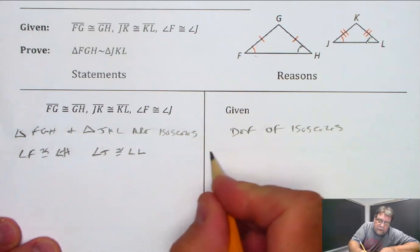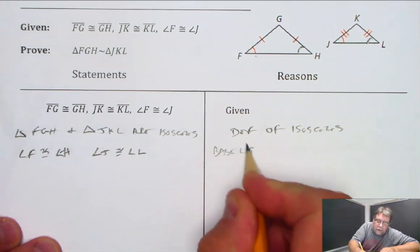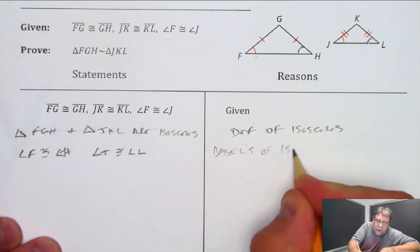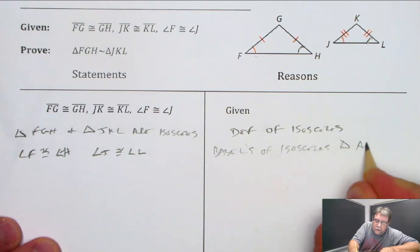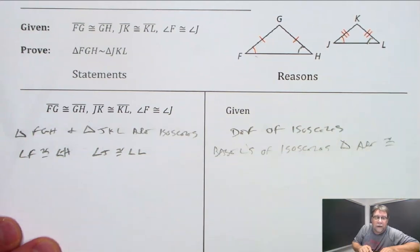So that is the idea that base angles of an isosceles triangle are congruent, okay? So now I know that these two are congruent and these two are congruent.